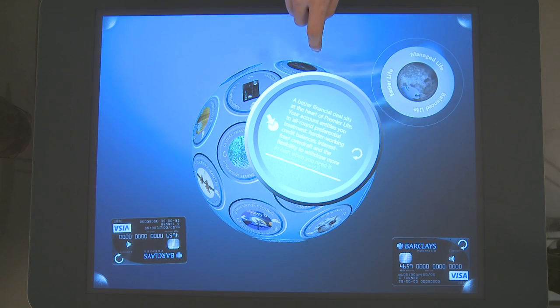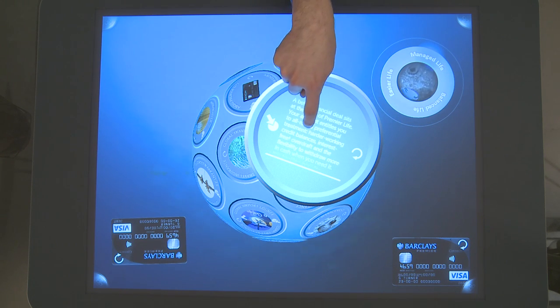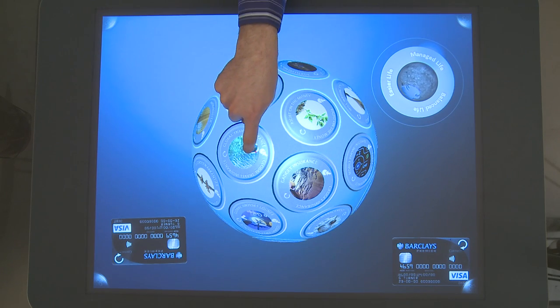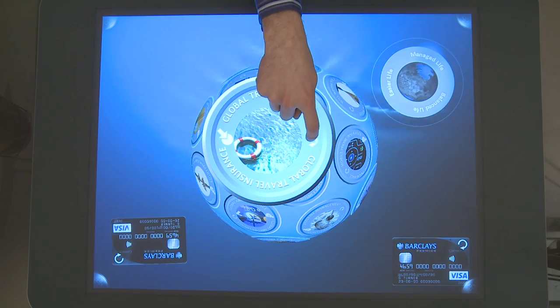Now if we want to flip it over to its opposite side, we push the flip button there. We'll flip over. We have text describing what this benefit is about. We can easily thumb through it. If we want, we can also close this card down here, pop up another one. It's global travel insurance. Flip it over in the exact same manner. Rotate, scale. It's all identical for every card.